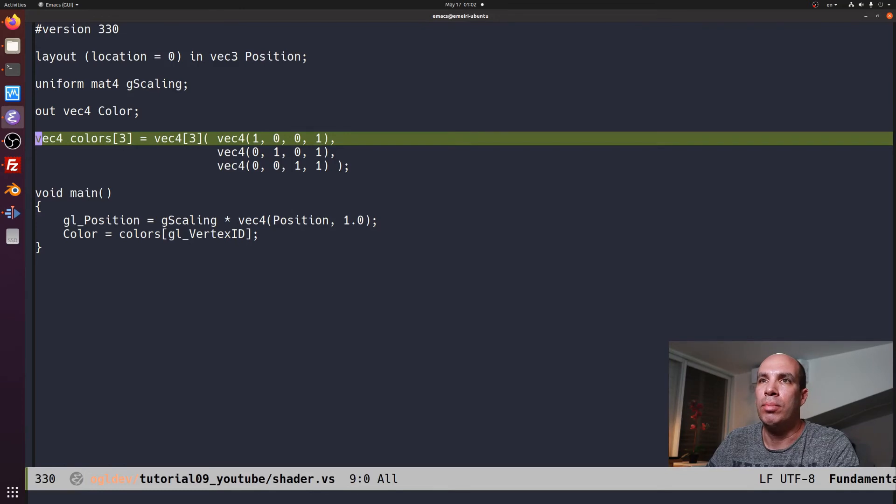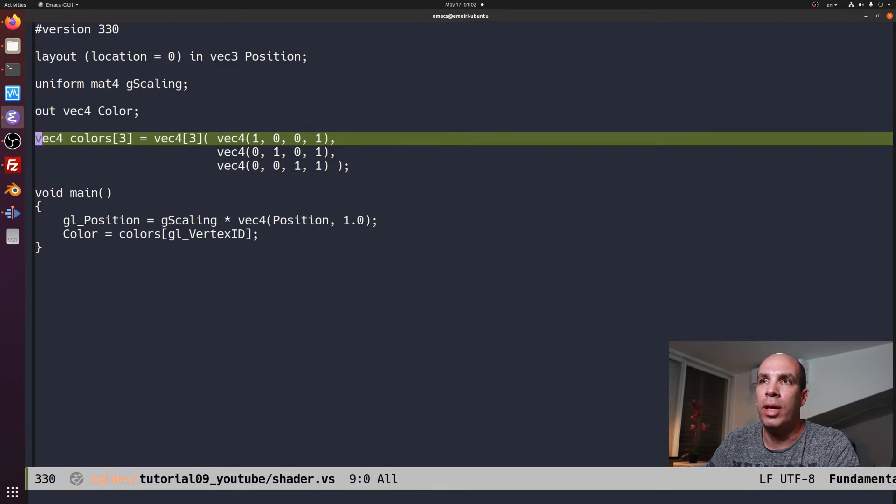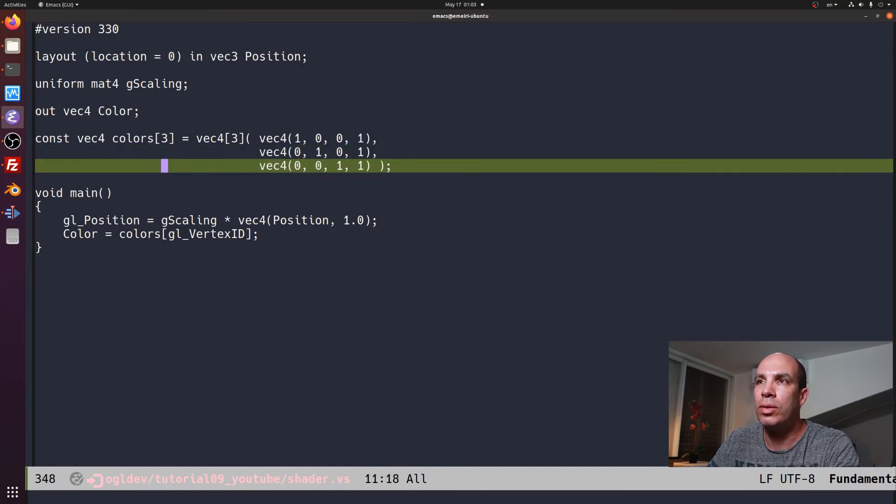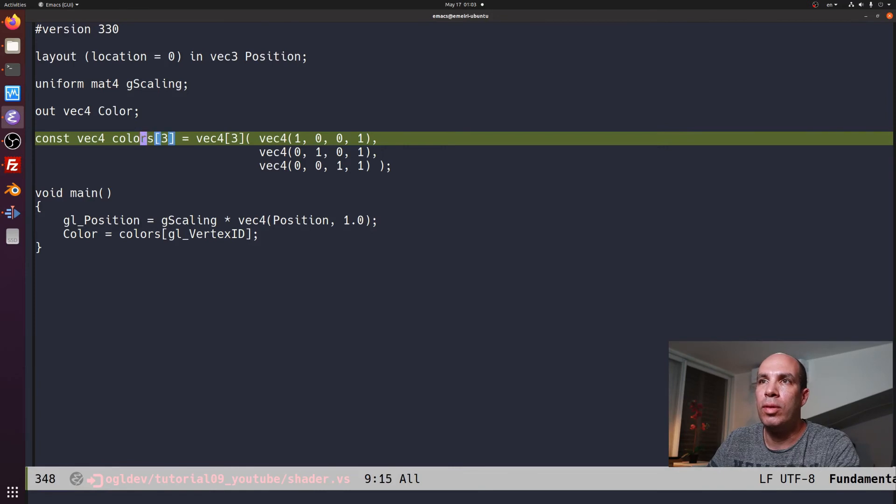We initialize basically a static array here. We can even write this to be const if it's more clear this way. And we can see that we have three vec4 elements here. We call this colors array, and look at the way that the array can be initialized. It's not exactly the same as in C. First we have the type here again, vec4, and then the number of elements in the array, three.